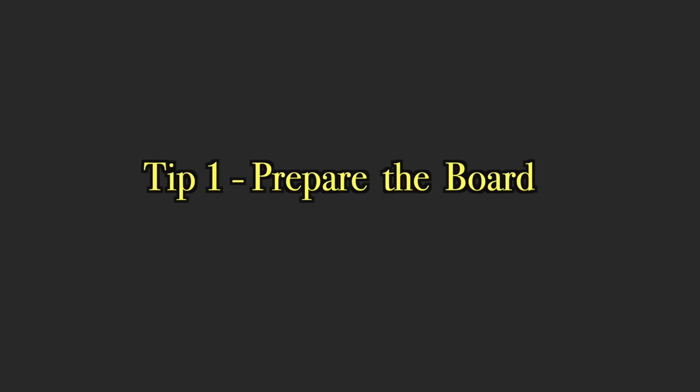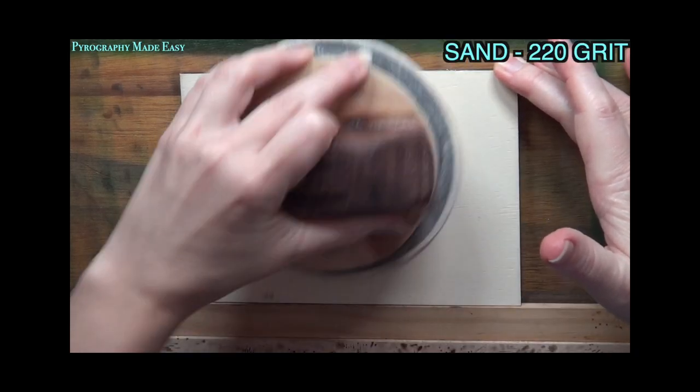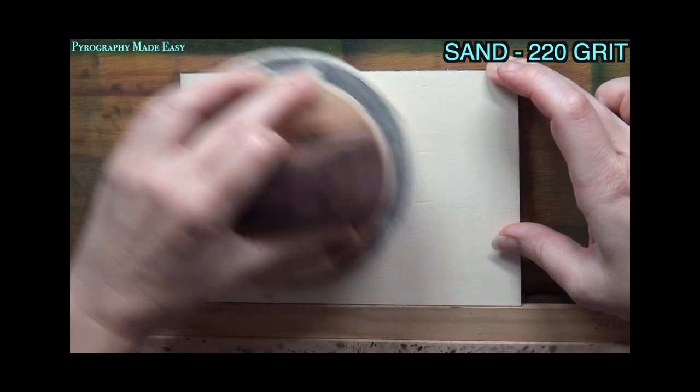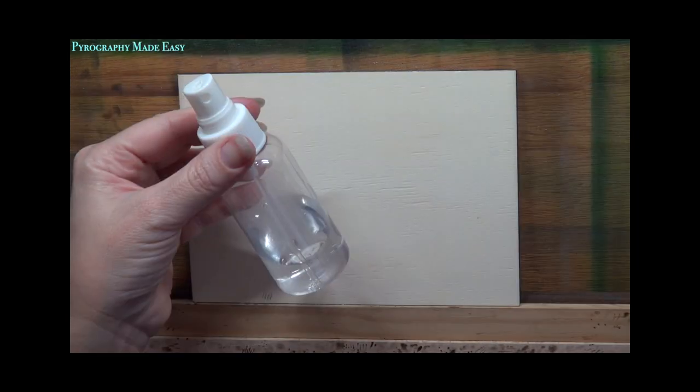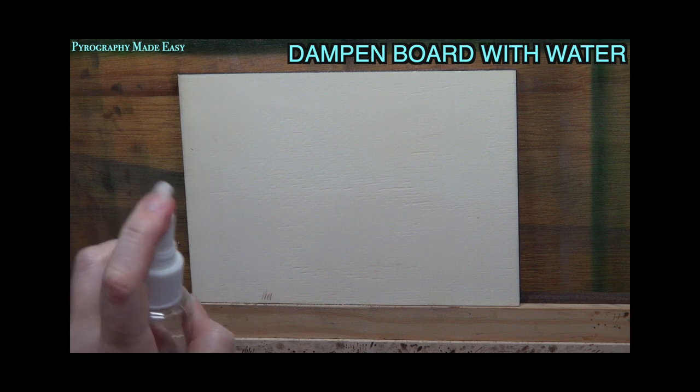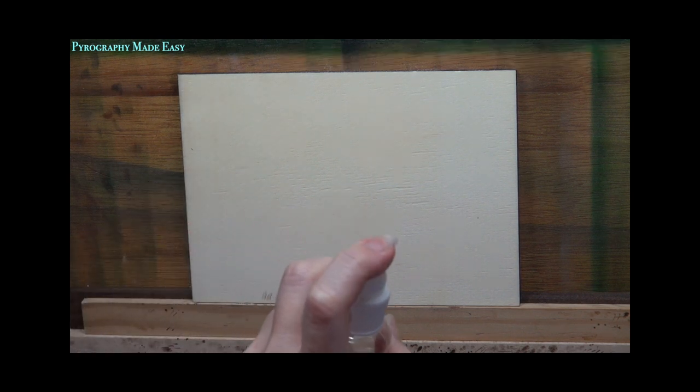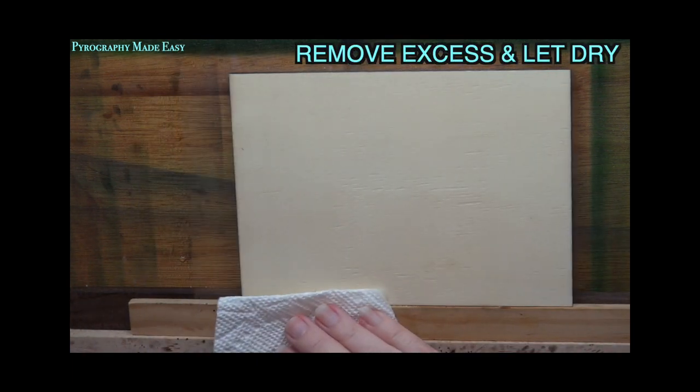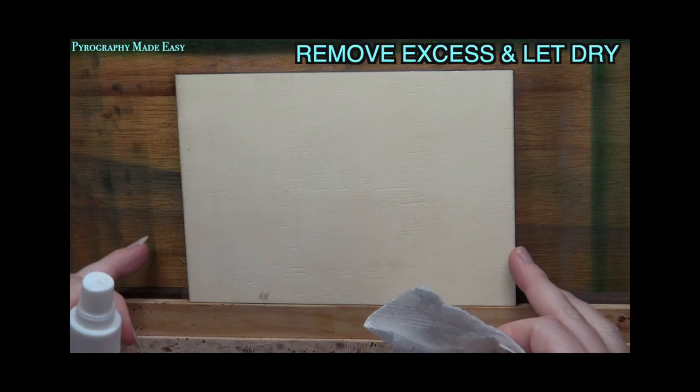Six tips. Tip one, prepare the board. Begin by thoroughly sanding the board with sandpaper that is around 220 grit or higher. Then lightly mist the board with water. The board should be damp but not soaking wet. Remove any excess water then allow the board to dry completely.